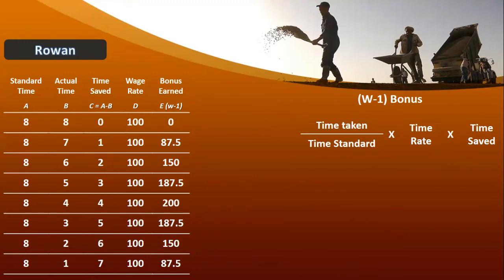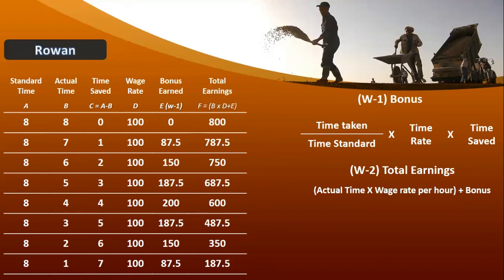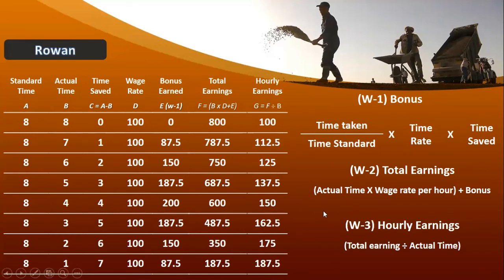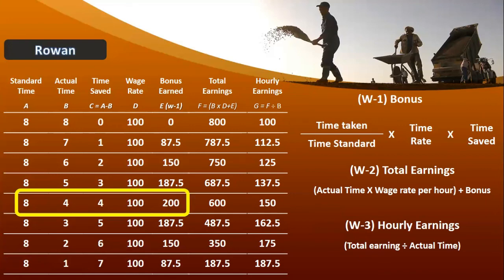2 hours, 3 hours — so on. Total earning: bonus plus time rate multiplied by actual hours. Gradually aapke paas income dekhein — total earning 800 aur gradually aapke paas earning decrease ho rahi hai. Agar earning aapki decrease ho rahi hai hourly earning — aapke paas Rowan mein agar actual hours standard ka 50% hoga to Rowan aur Halsey mein bonus equal hoga — dono conditions mein. Dono condition mein Rowan aur Halsey mein bonus jab 8 hours actual 4 hours — dono conditions mein jo bonus 200 hai.